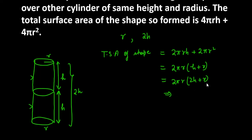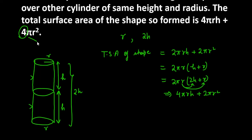This is our final expression, and now let's simplify it. Expanding: 2πr × 2h gives 4πrh, and 2πr × r gives 2πr². So the correct total surface area is 4πrh + 2πr². But the statement given says 4πr² — that term is wrong. The correct answer is 4πrh + 2πr², so this statement is false.